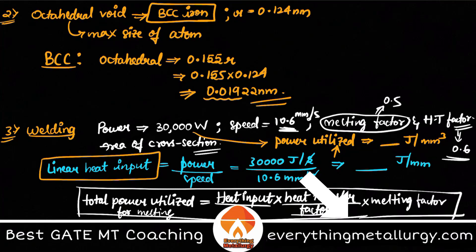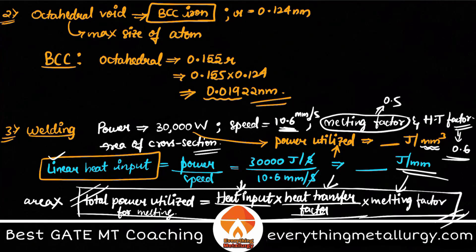In terms of heat transfer factor and melting factor, we just considered the losses into the atmosphere, the heat losses. So we know the heat input from here. We know the total power utilized for melting. Again this is in joule per mm³. Therefore you need to convert this. You need to multiply area into the total power utilized, which will give the same joule per mm unit. Unit balance is very important in this question. So area × total power utilized for melting = heat input × heat transfer factor × melting factor. On doing everything - melting factor is given, heat transfer factor is given, heat input you can easily calculate using the formula power by speed, total power is given. Only unknown is the area here. You can just take this on the other side and easily calculate area.